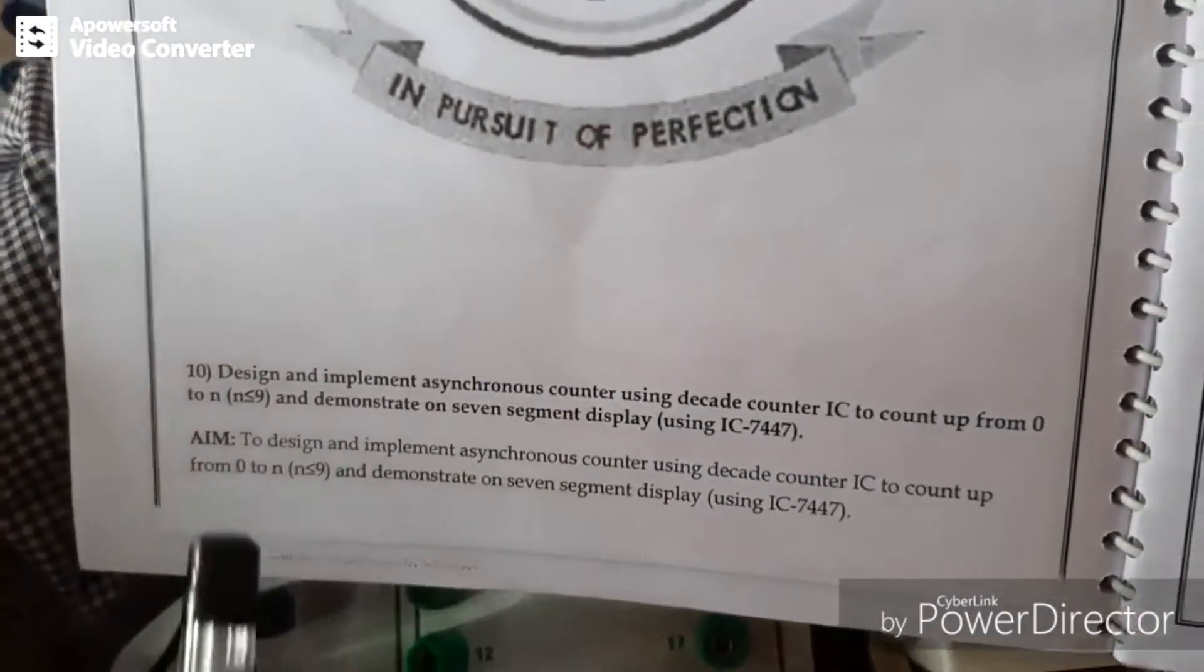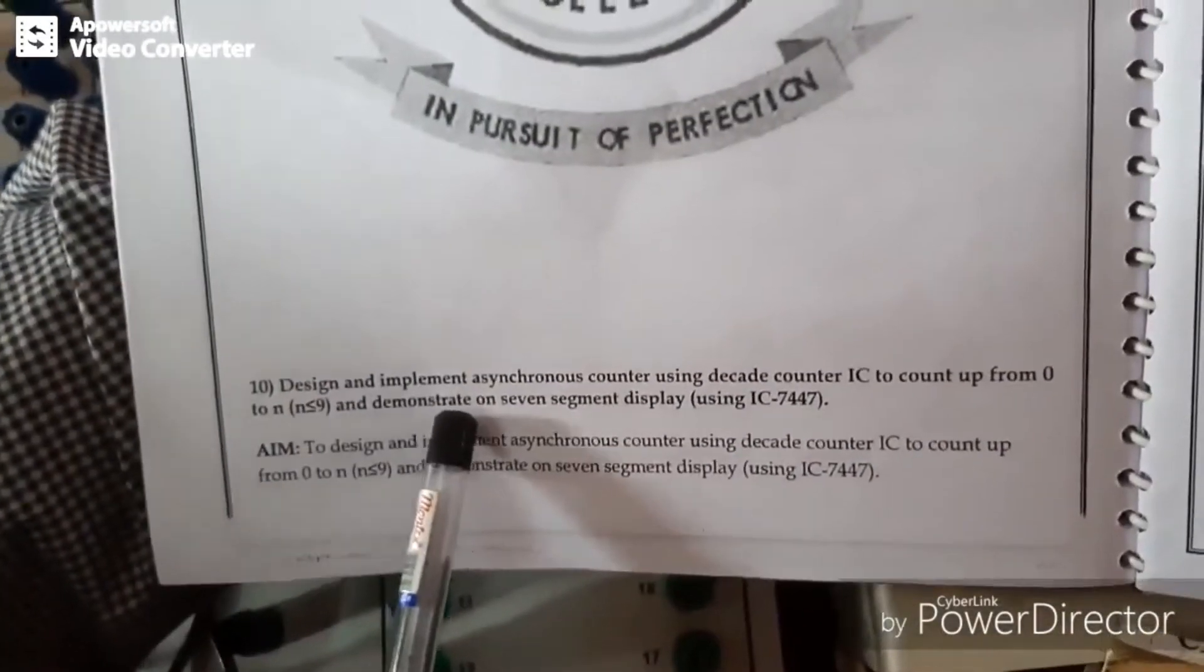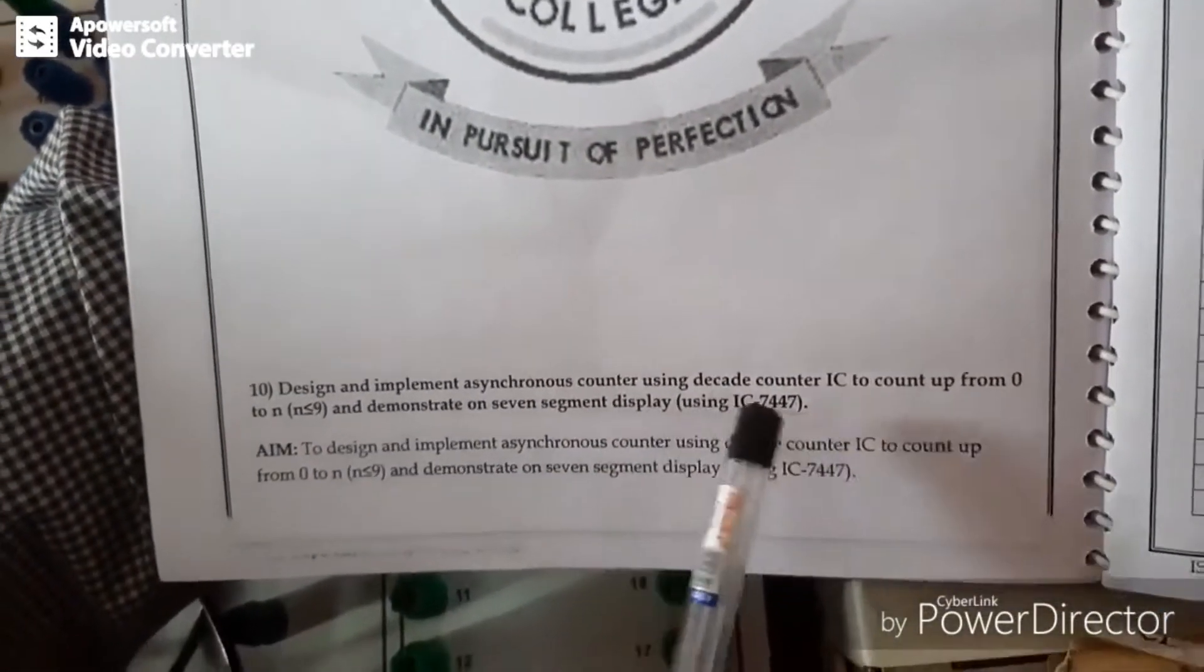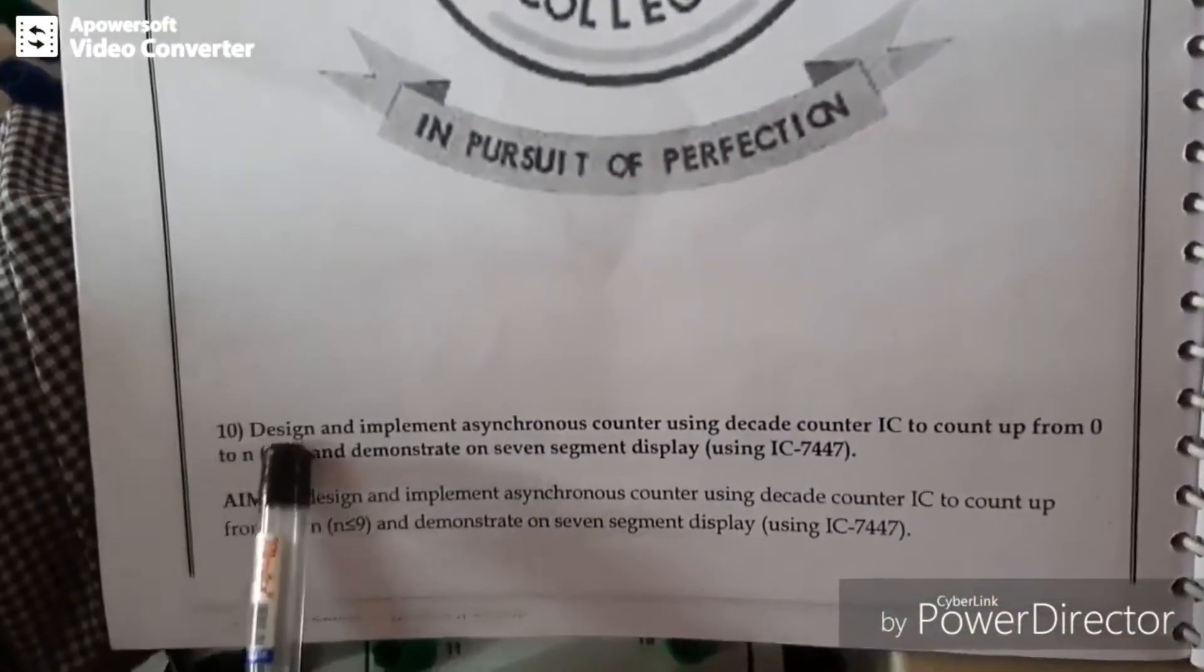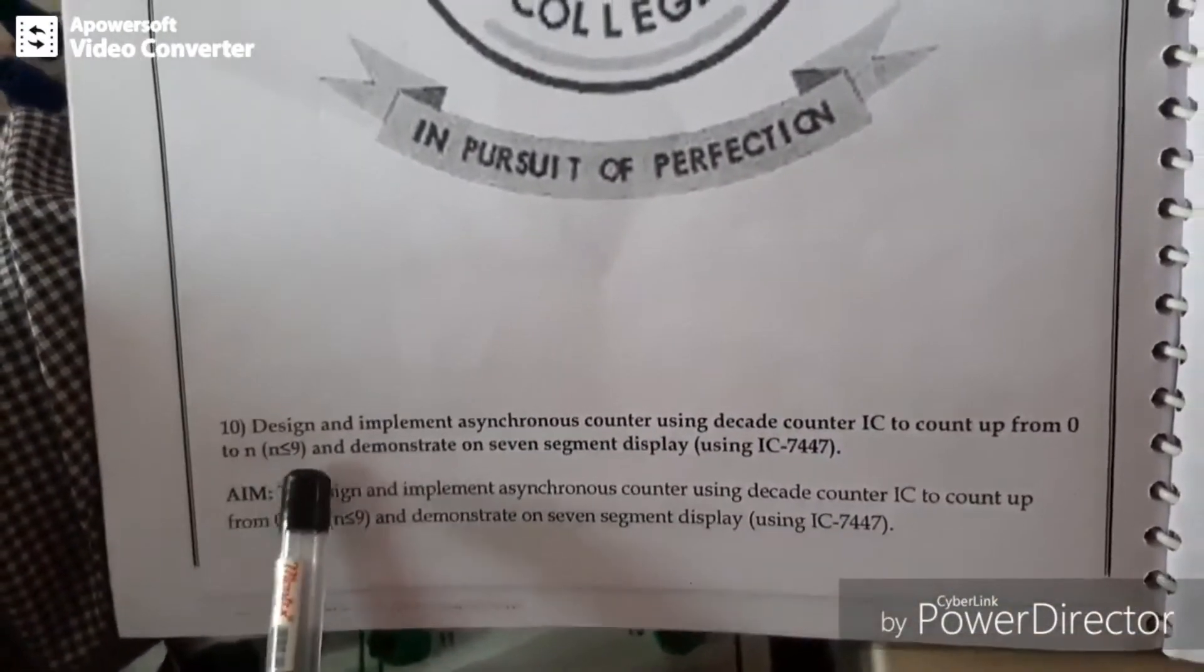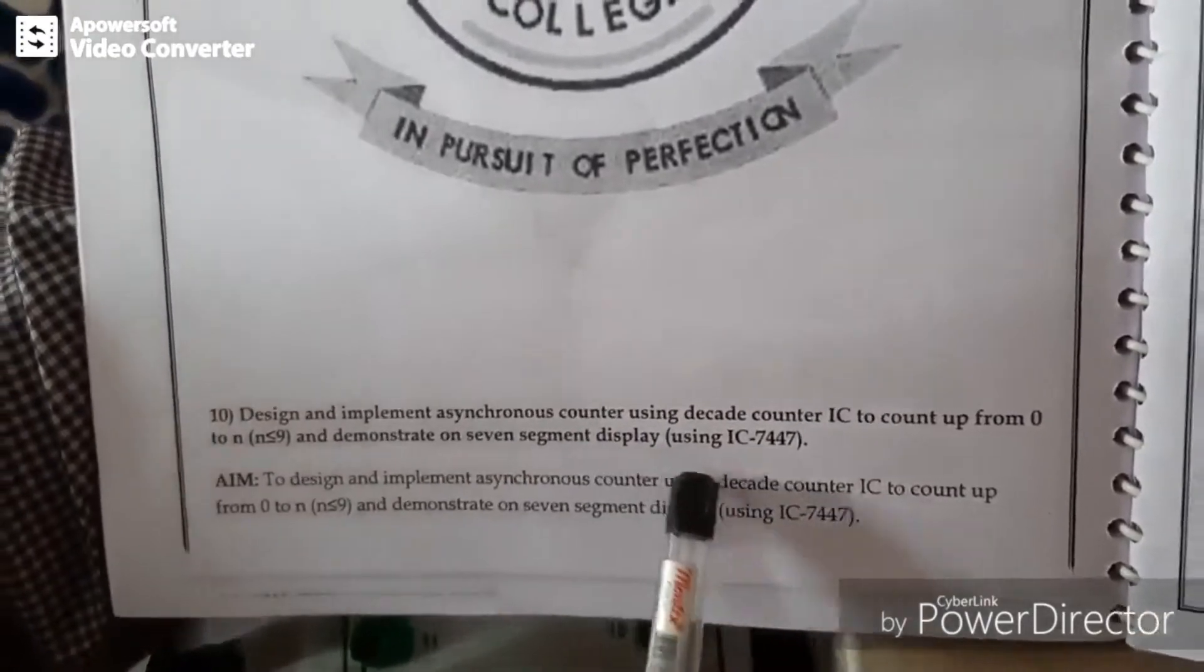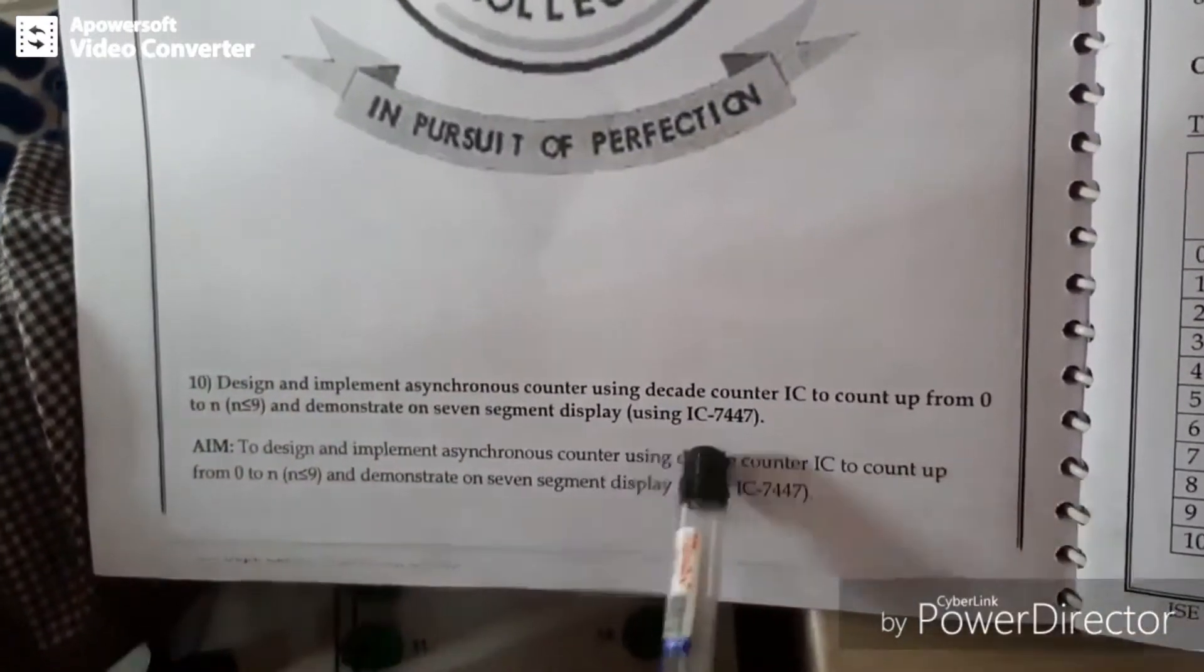The 10th experiment in your syllabus is to design and implement a synchronous counter using decade counter IC to count from 0 to n, where n is less than or equal to 9, and demonstrate on the 7-segment display using 7447.